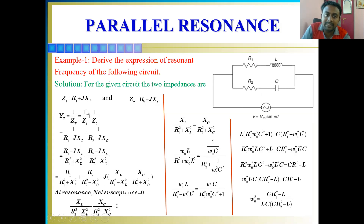We know the Z1 and Z2 values. Substituting and cross-multiplying with R1 minus jXL for the first term and R2 plus jXC for the second term, we get these equations. Separating the real parts and imaginary parts: the real part of the first equation is R1 divided by (R1² + XL²), and the real part of the second equation is R2 divided by (R2² + XC²).